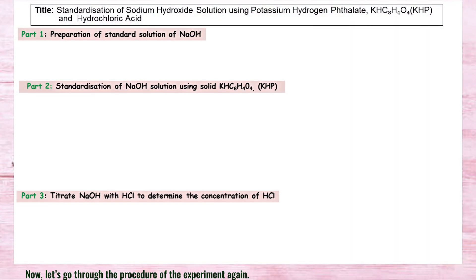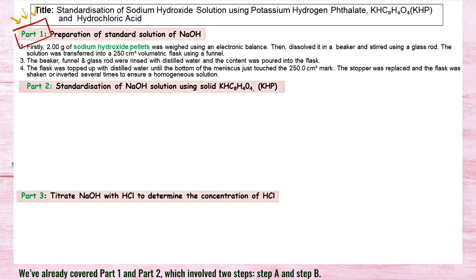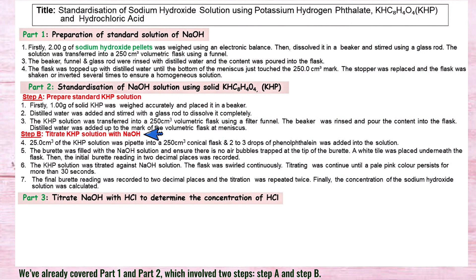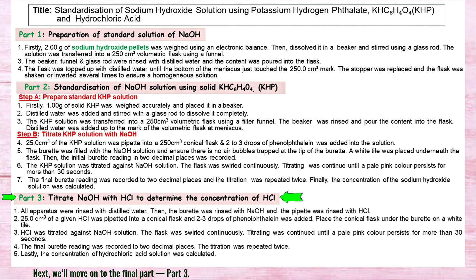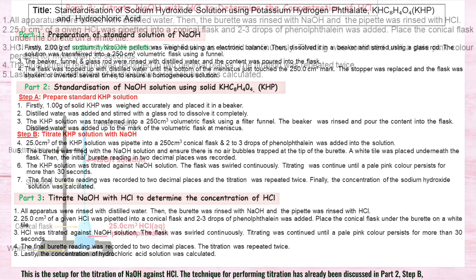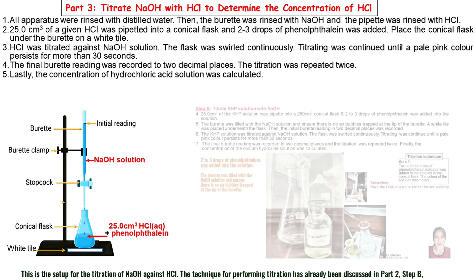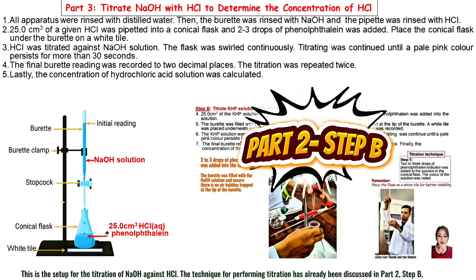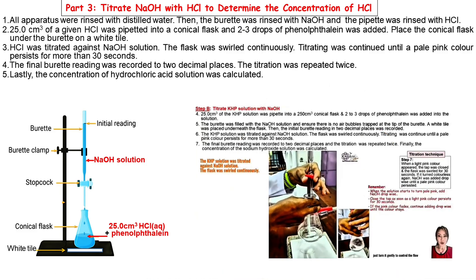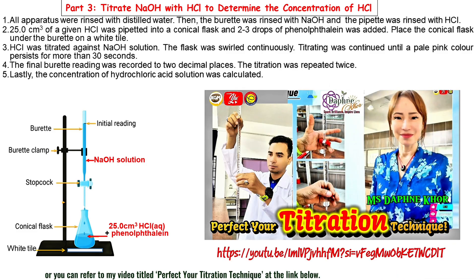Now let's go through the procedure again. We have already covered Part 1 and Part 2, which involve Step A and Step B. Next, we move on to the final part — Part 3: titrate NaOH with HCl to determine the concentration of the acid. This is the setup for titration of NaOH against HCl. The technique for performing titration has already been discussed in Part 2, Step B, or you can refer to the video titled 'Perfect Your Titration Technique' at the link below.